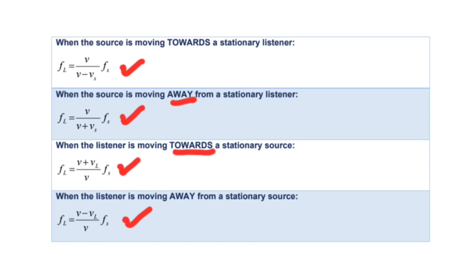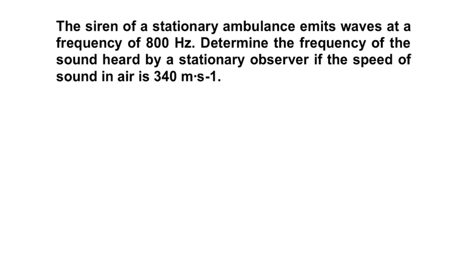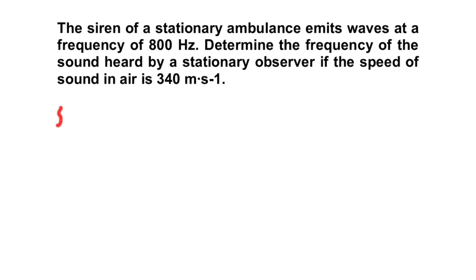Take a look at the first scenario — stationary source and stationary listeners — where the frequency emitted by the source is the very same frequency observed by the listener. The siren of a stationary ambulance emits waves at a frequency of 800 Hz. Determine the frequency of sound heard by a stationary observer if the speed of sound in air is 340 meters per second.